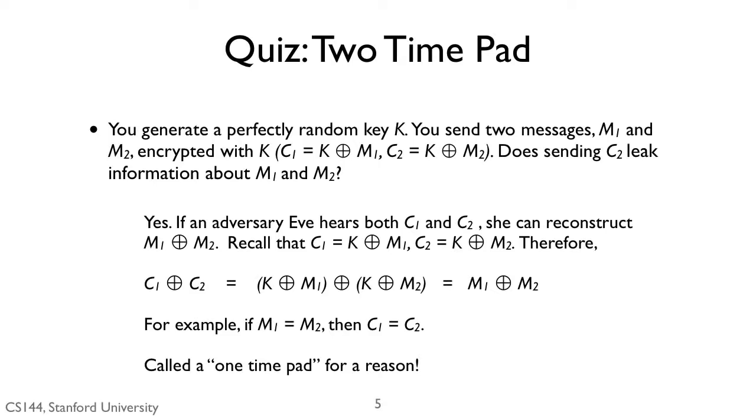As a trivial example, if it happens to be that M1 is equal to M2, then Eve can figure this out since C1 and C2 will be the same.